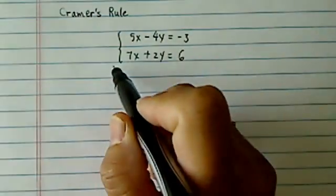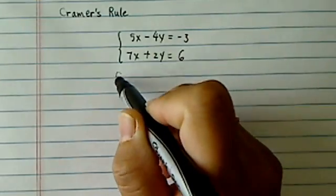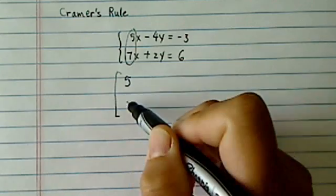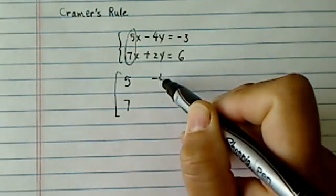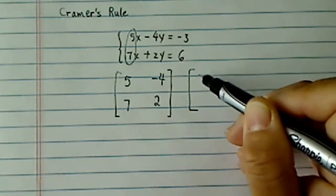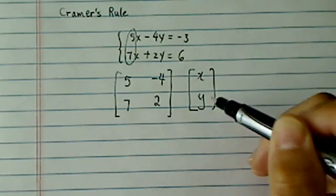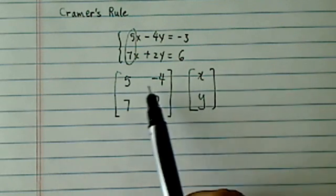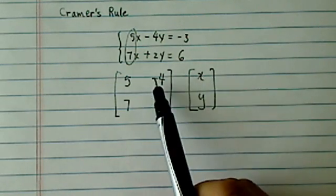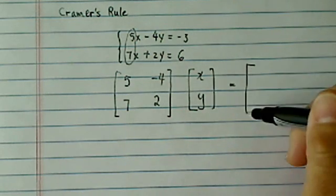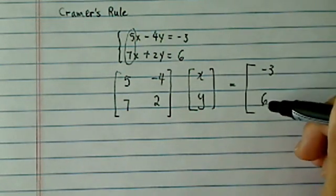Cramer's Rule says, look, I'm going to rewrite this system of equations by taking the coefficients. Let's put the coefficients down here. And I'm going to put the variables here using matrix form. So matrix form says row times column. So you have 5x minus 4y, which is the first one, equal to the solution, which is minus 3 and 6.